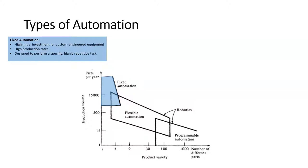There is a high initial investment for custom engineered equipment with fixed automation, but once that investment is completed, the cost of making tens of thousands or hundreds of thousands of parts per year diminishes over time. A good example of fixed automation is an injection molding machine, where the molds are very expensive and custom made to produce a specific part. Once up and running, it can produce hundreds of thousands of plastic parts quickly, rapidly, and easily.